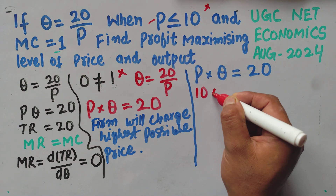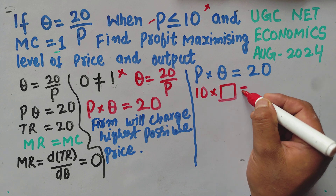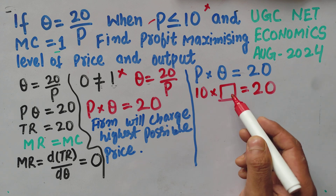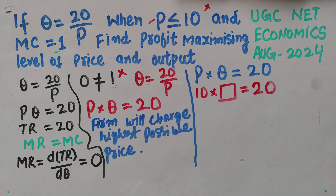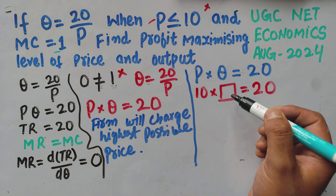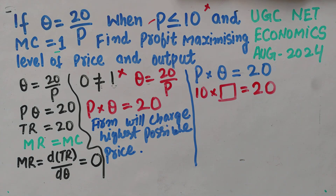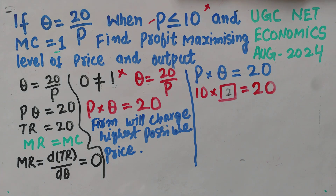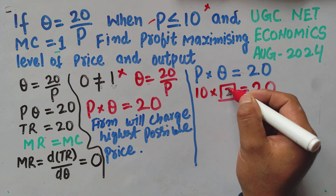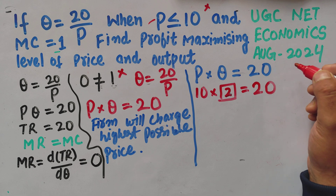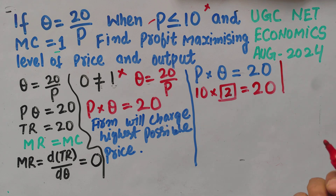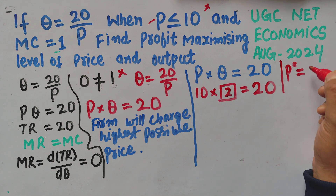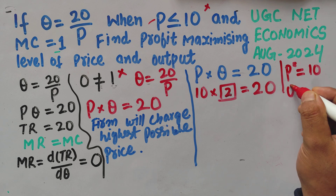If price is 10, we substitute into p × q = 20 to find q. So 10 × q = 20, which gives q = 2 — since 10 × 2 = 20. Therefore, the profit-maximizing price is equal to 10 and the profit-maximizing output is equal to 2.